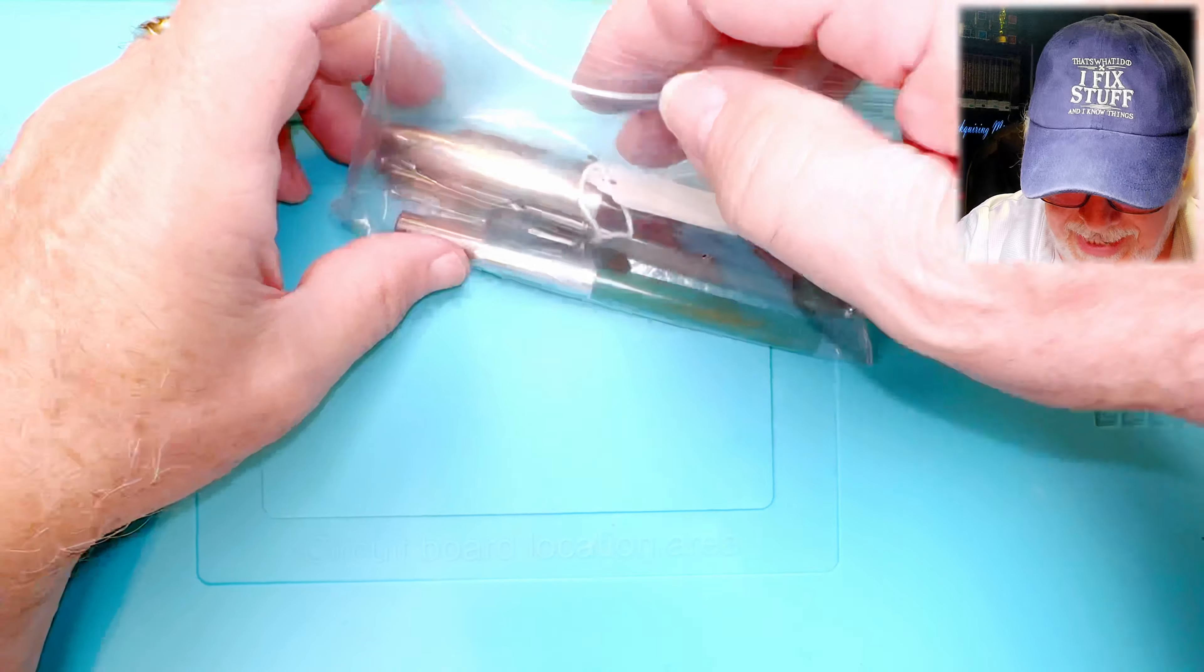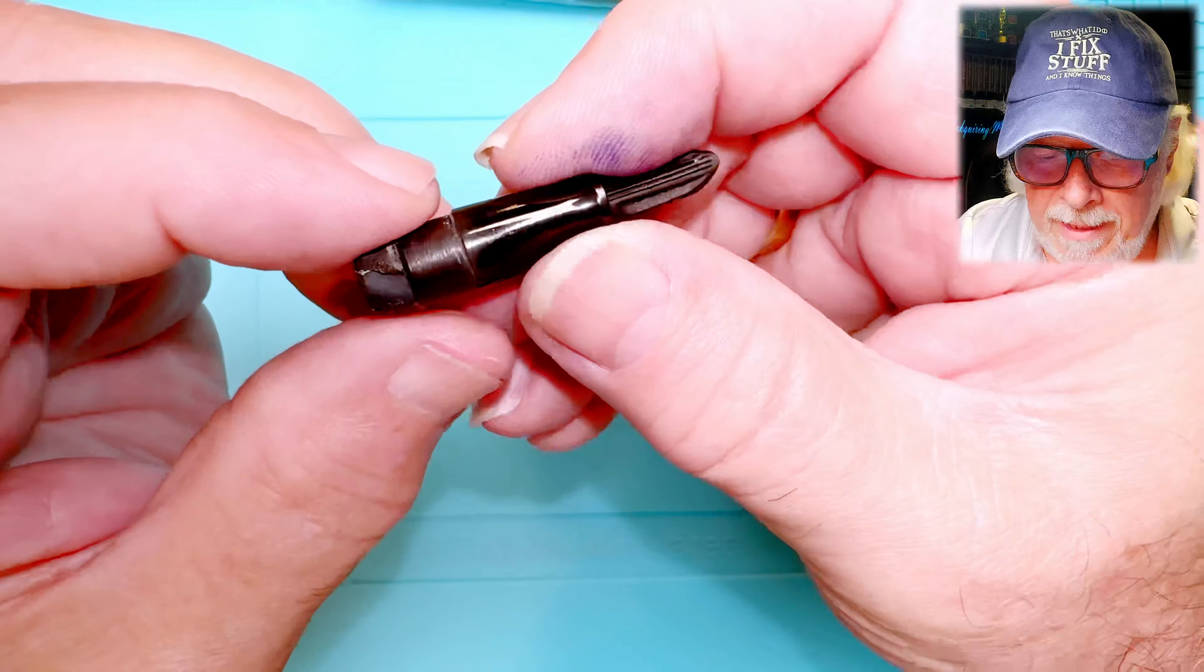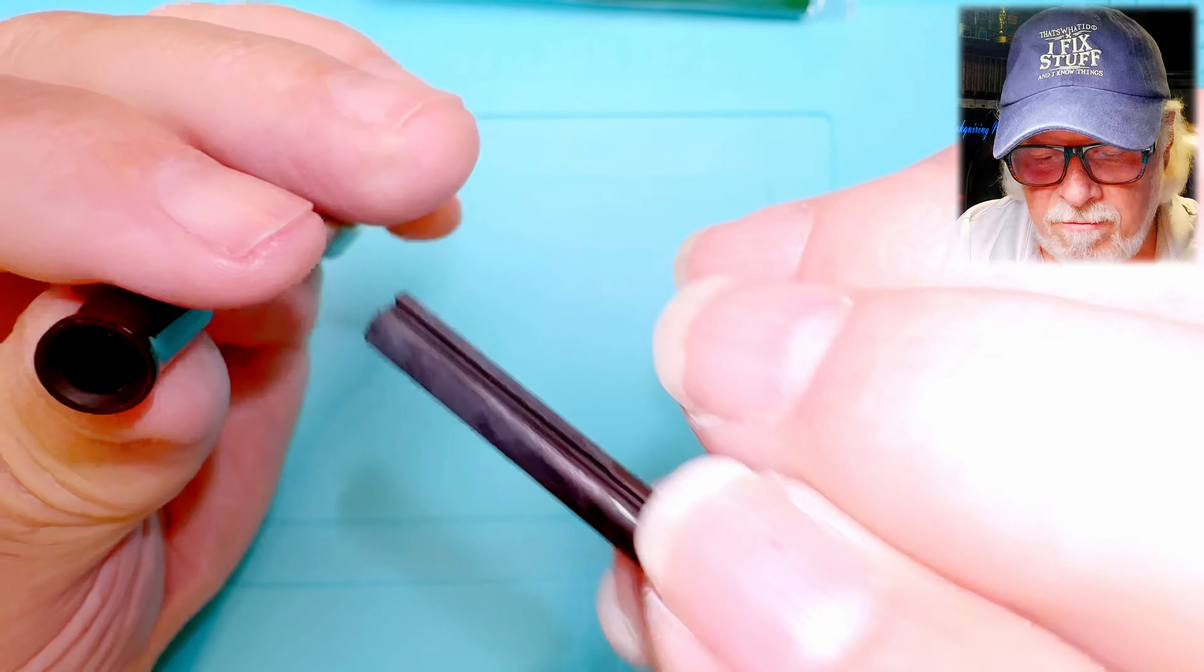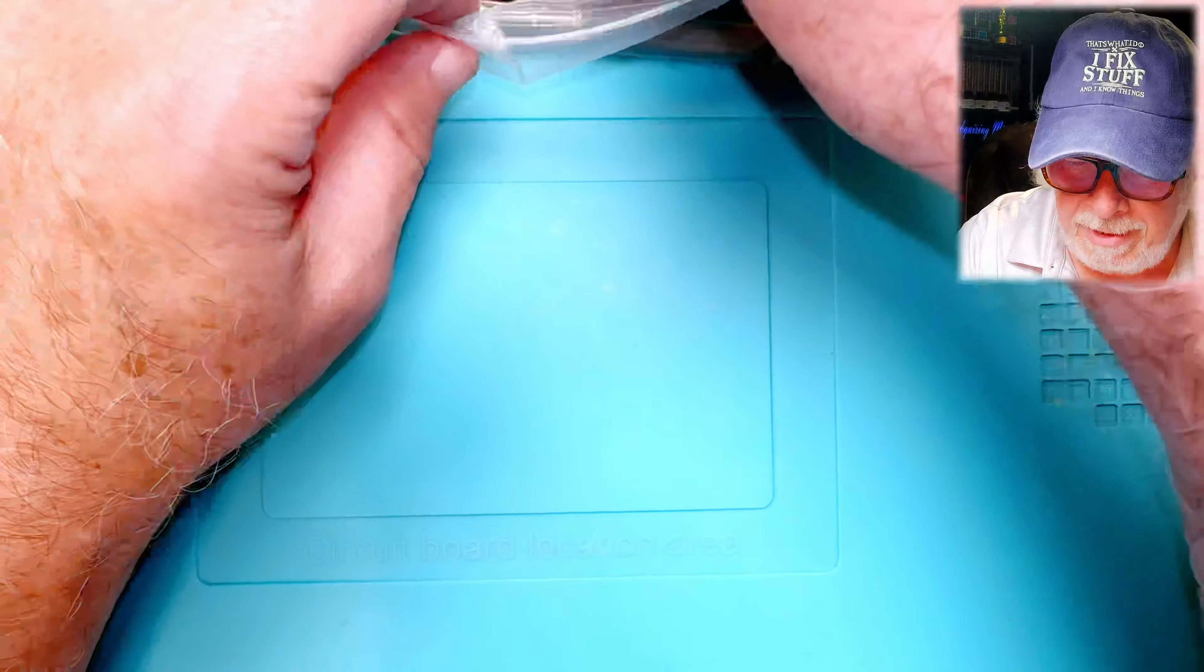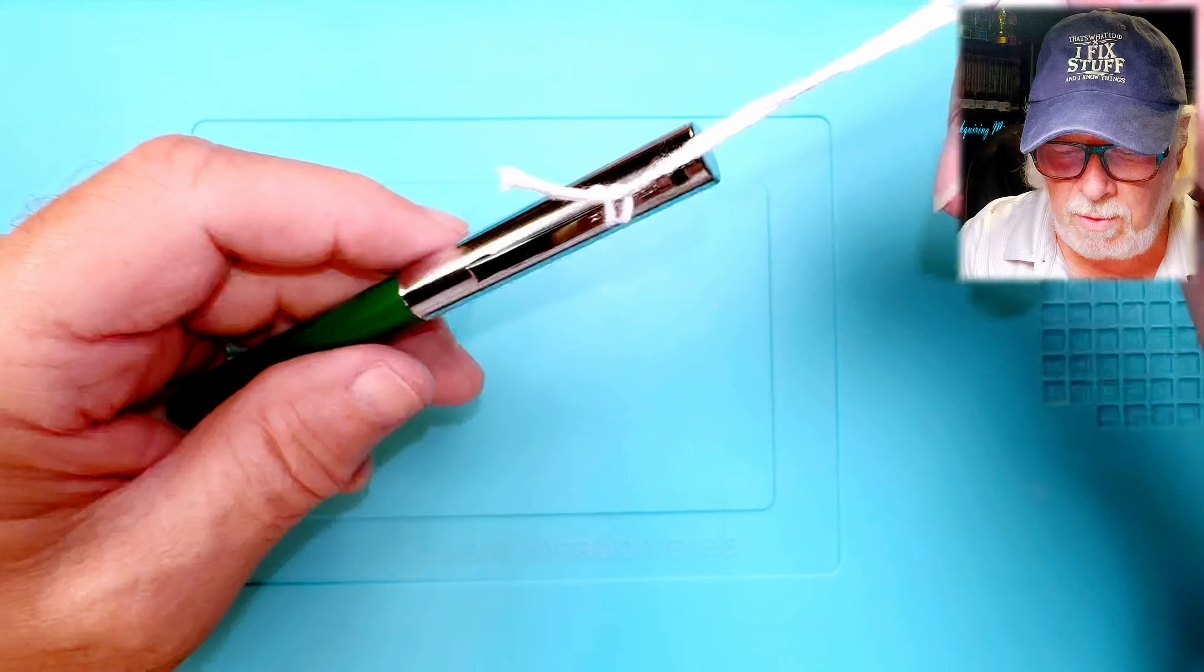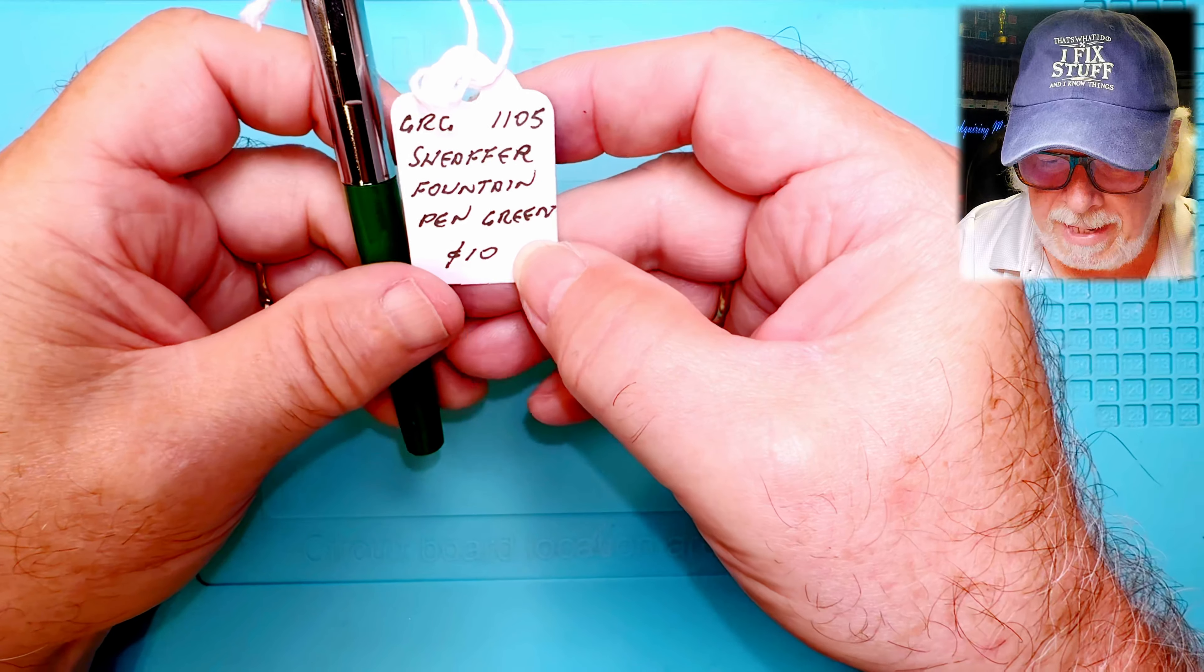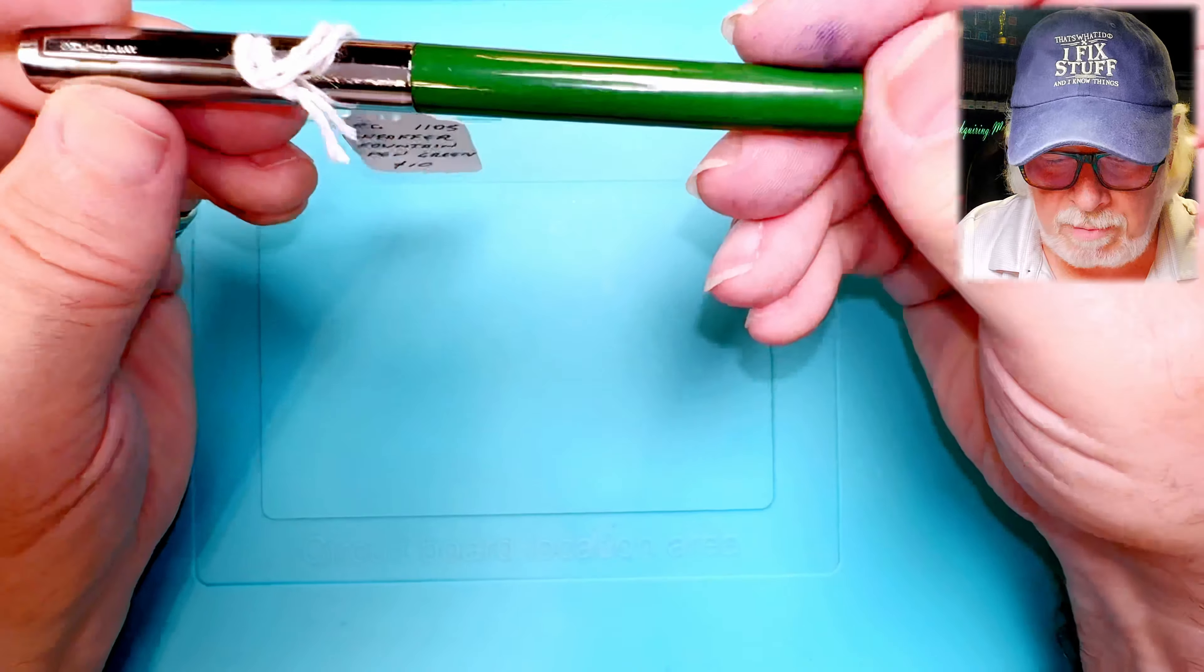Let's go to the bag again. Well, here's a part. I have no idea what it's from. It's got an old sack on it and an ebonite feed. Well, that goes in my parts bin. Here's another tag attached to a pen. And Schaefer fountain pen, green. 10 bucks.